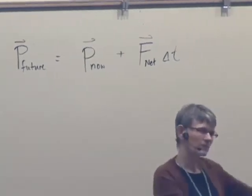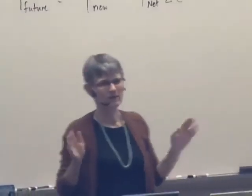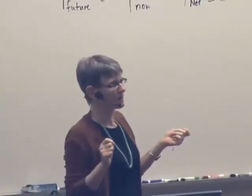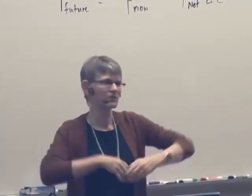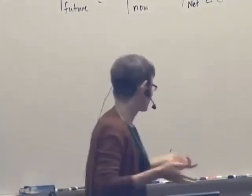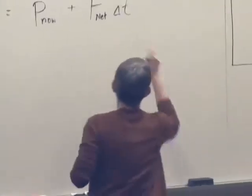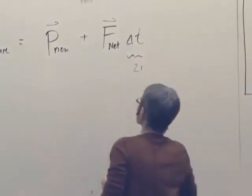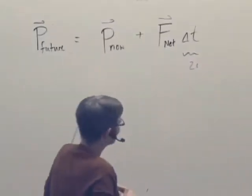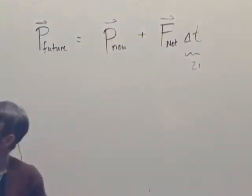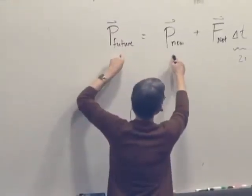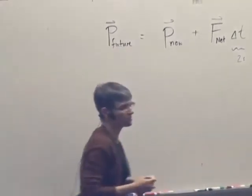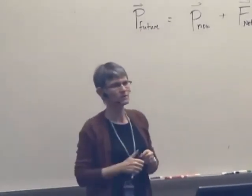Depends on both the momentum a system has now and the net force acting on the system now applied during some small time interval delta t. So since this thing is moving at a constant momentum, that means its velocity is constant. So we can take some arbitrary time delta t. We could say two seconds.